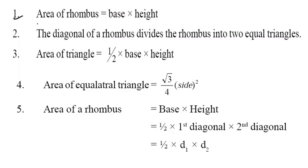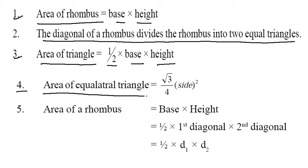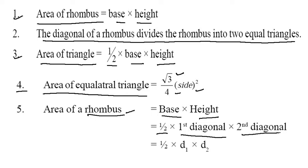So first, the area of rhombus — as you know — is base into height. The diagonal of a rhombus divides it into two equal triangles. Third, the area of a triangle is 1/2 × base × height. Fourth, the area of an equilateral triangle is √3/4 × side². Area of rhombus is base × height, or if the diagonals are given, it is 1/2 × D1 × D2.